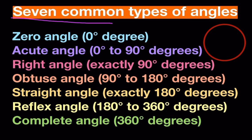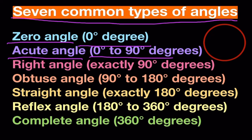7 common types of angles. Zero angle, 0 degree. Acute angle, 0 to 90 degrees. Right angle, exactly 90 degrees.